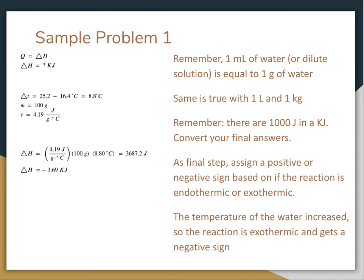Really important thing here is that we got an answer in joules. You almost always want to have an answer in kilojoules when you are doing enthalpy calculations. So we need to do a conversion here. We can divide this by 1,000, which would give us 3.69 kilojoules.